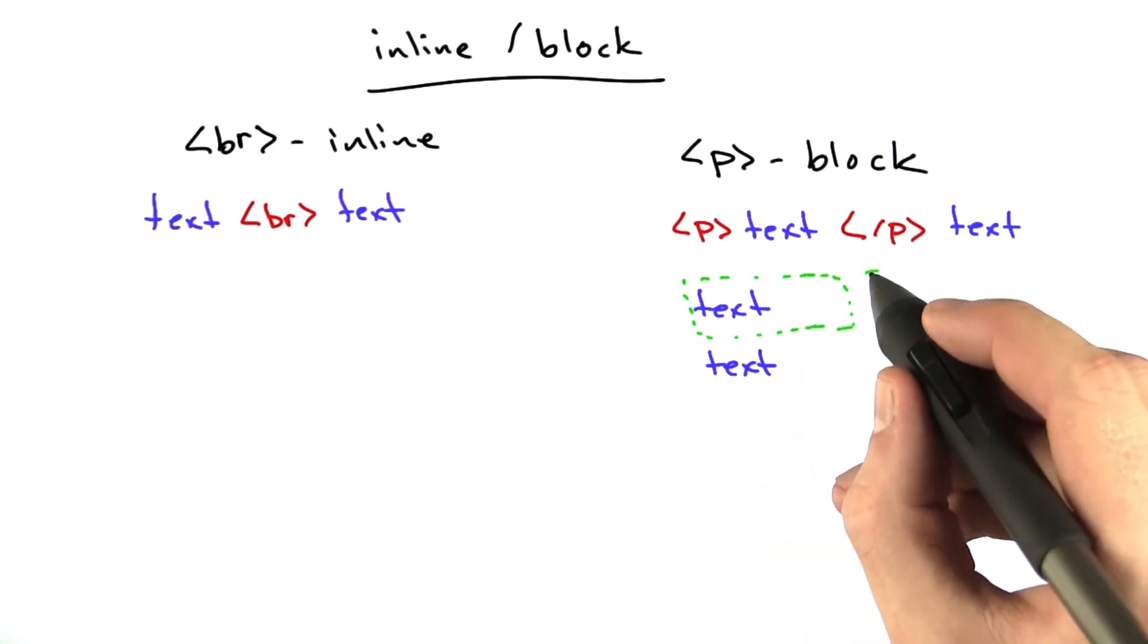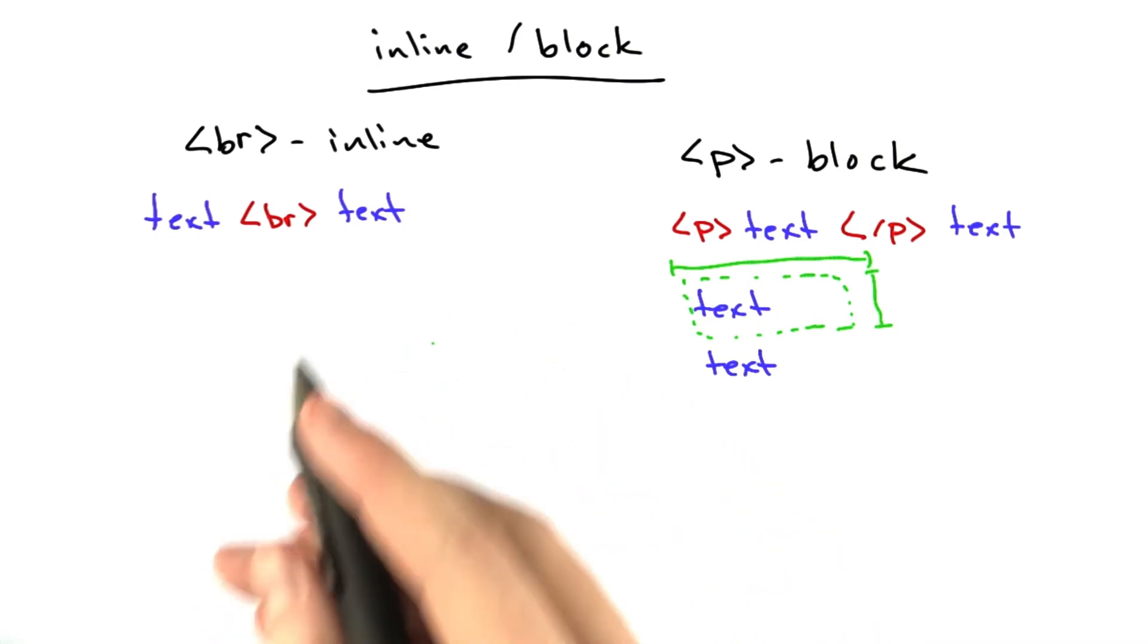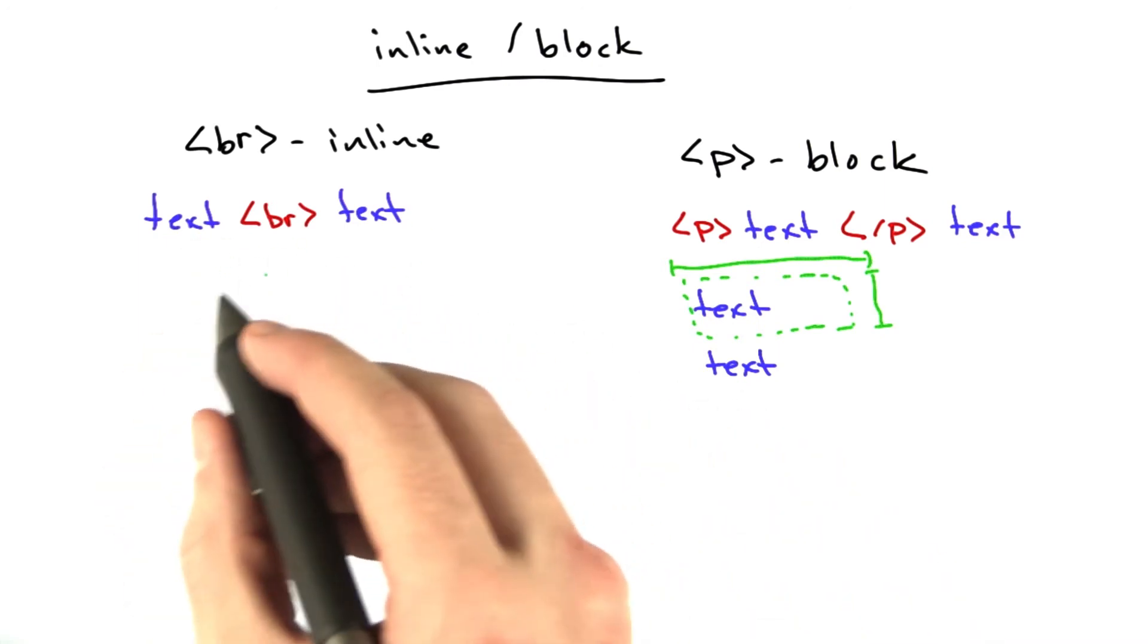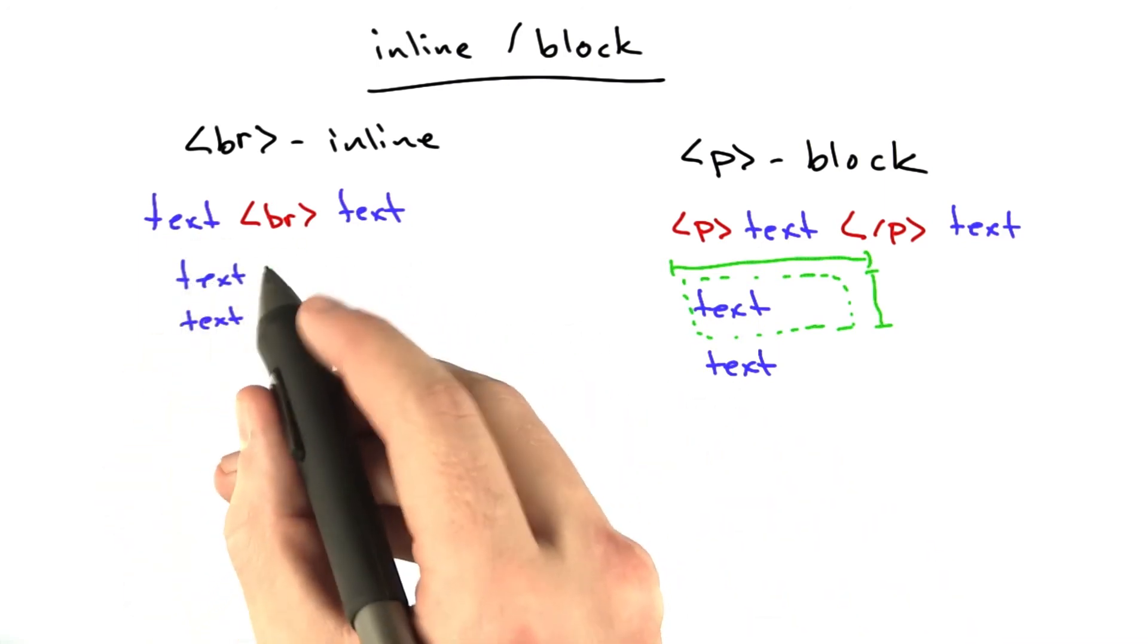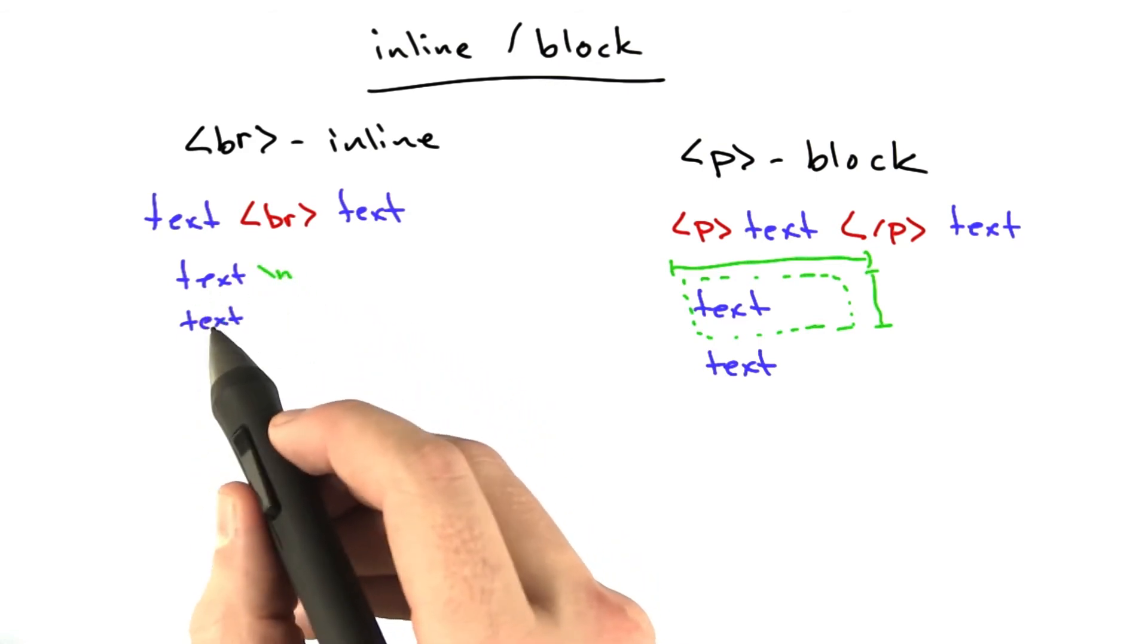This invisible box can actually have height and it can have width, where inline elements are just text. The example over here would be more like this. It's just two lines of text and there's really just a little new line here. There's nothing fancy going on.